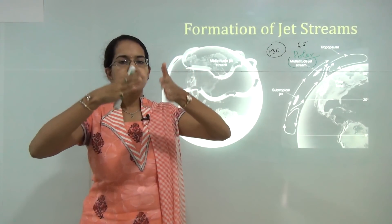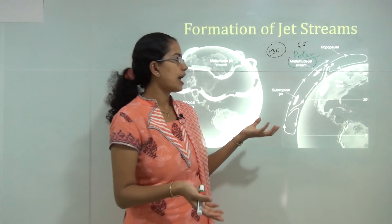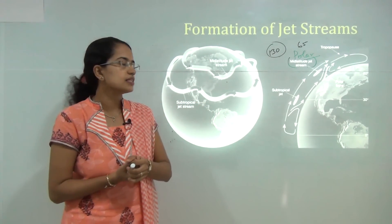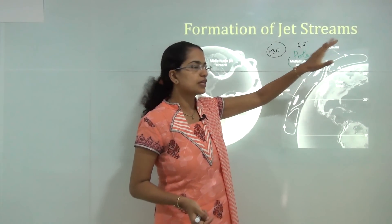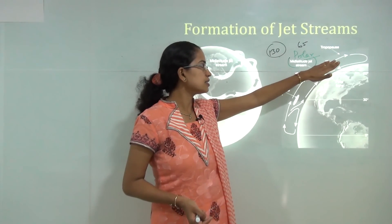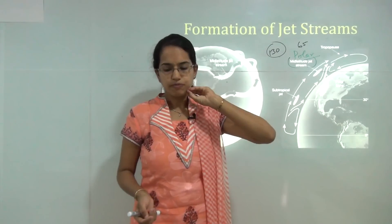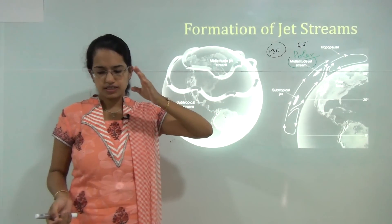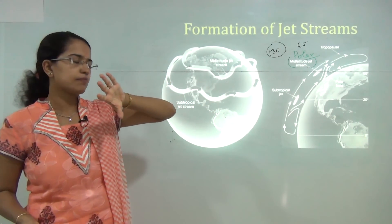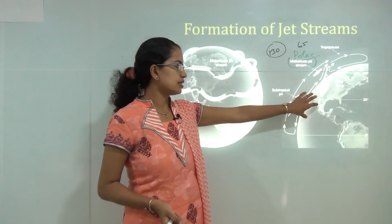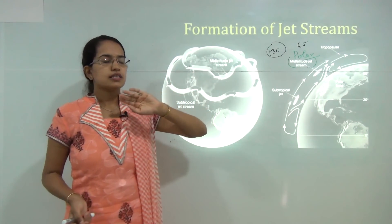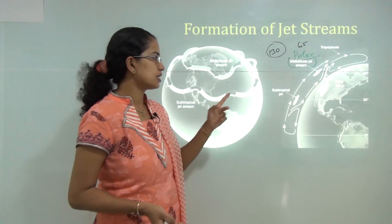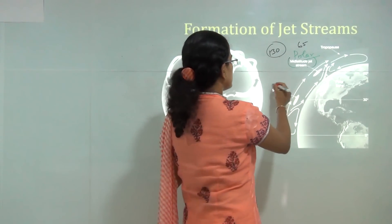Areas of divergence bring air downstream, while areas of convergence produce cyclonic or extratropical cyclonic conditions, which will be covered under cyclones in a later class. The next type is the subtropical jet stream, occurring around 13 kilometers above the subtropical high pressure area, usually found in subtropical latitudes. These are less intense compared to polar jet streams, with less temperature and pressure gradient.